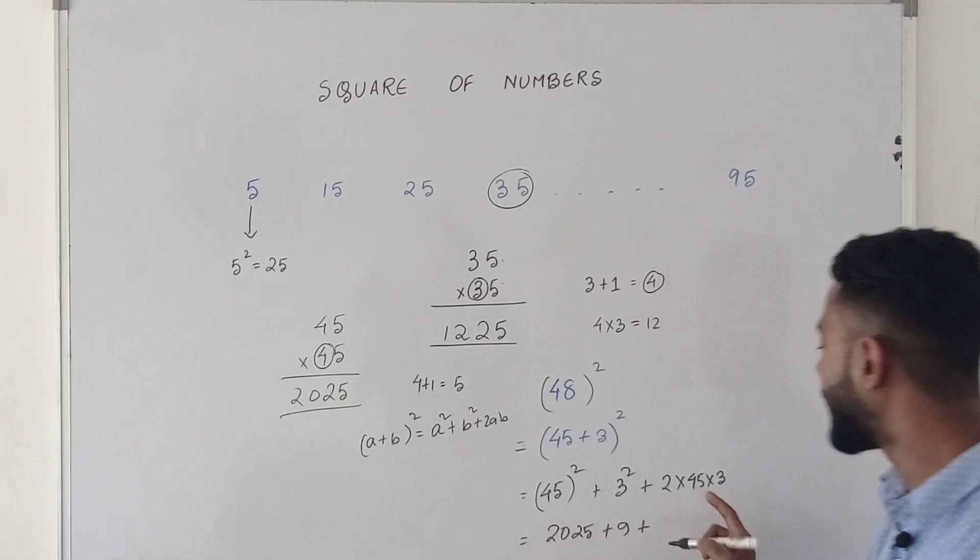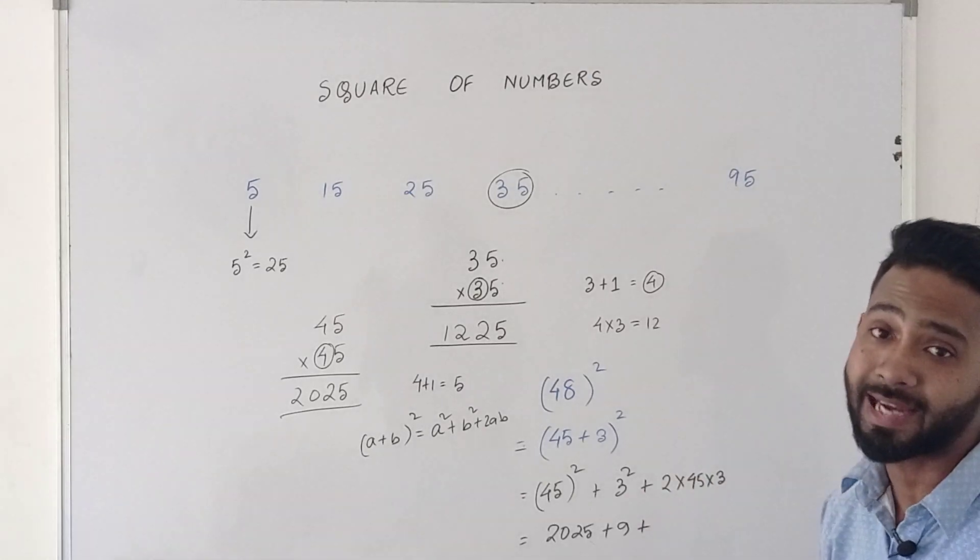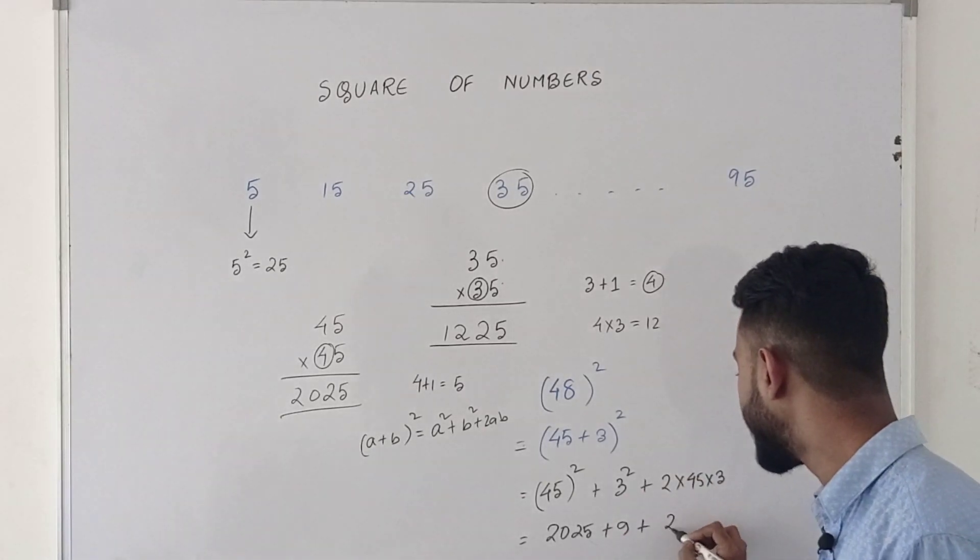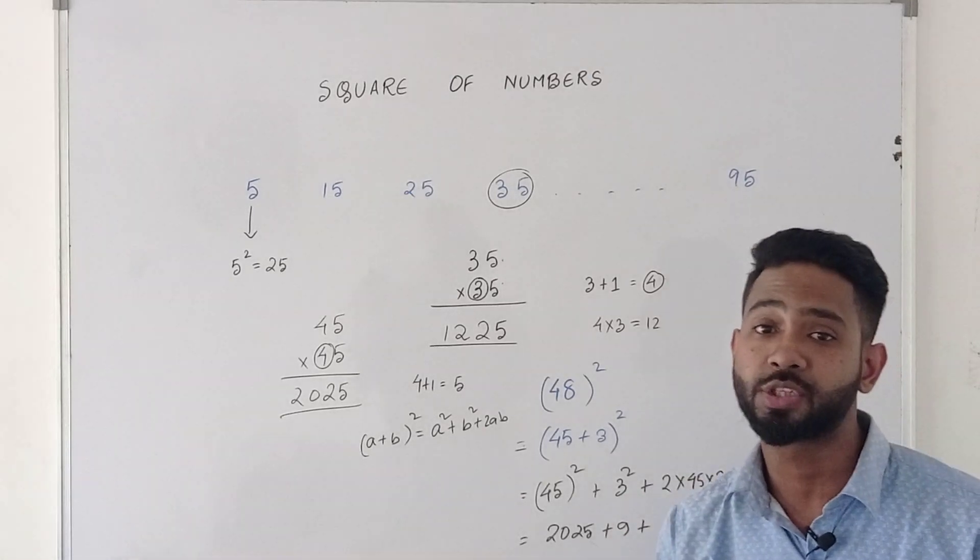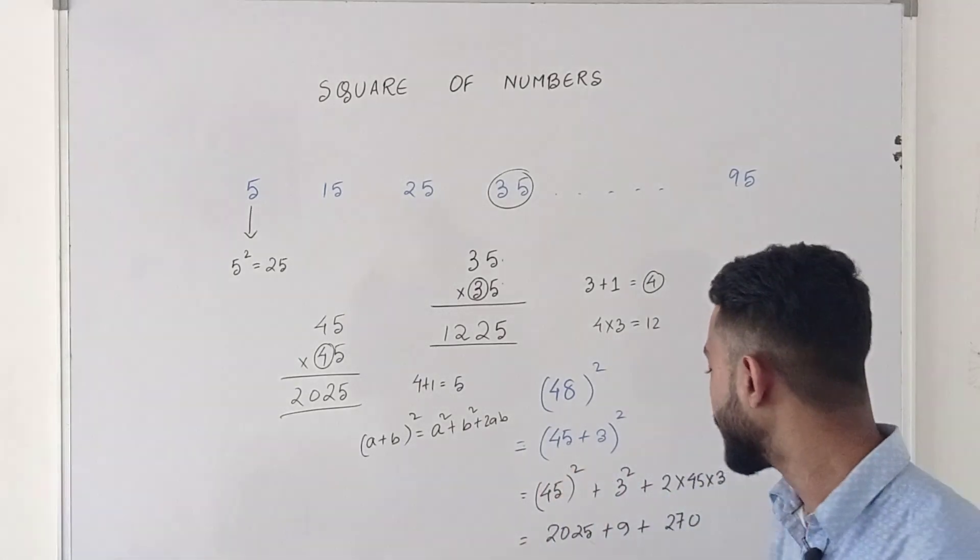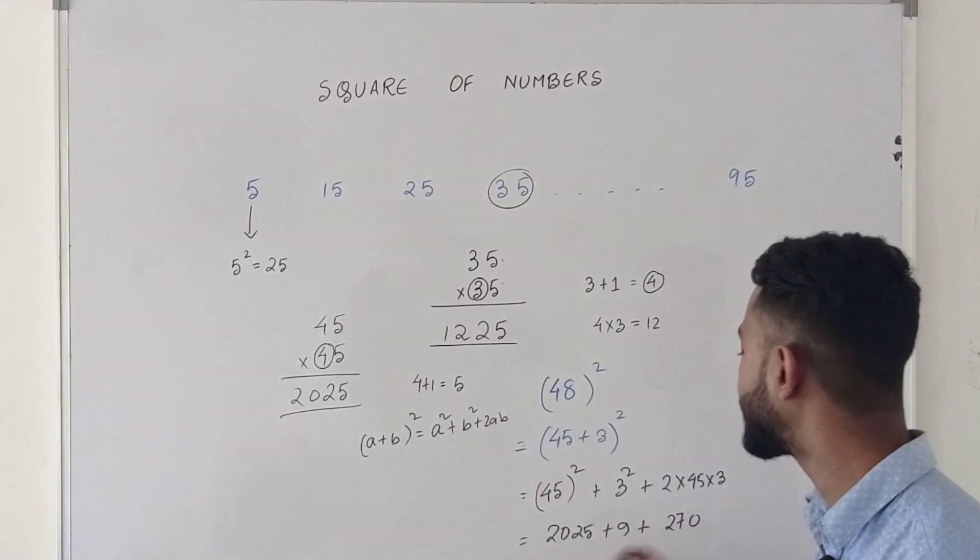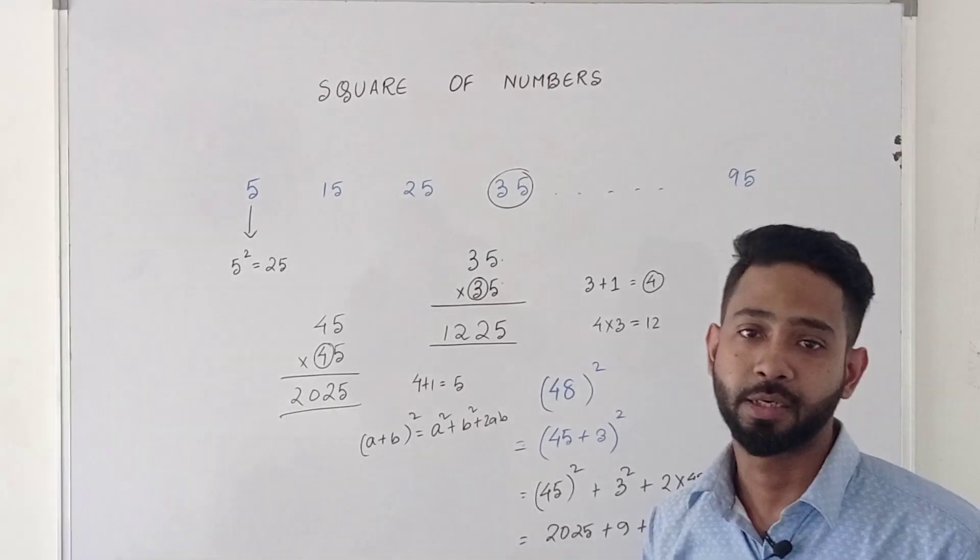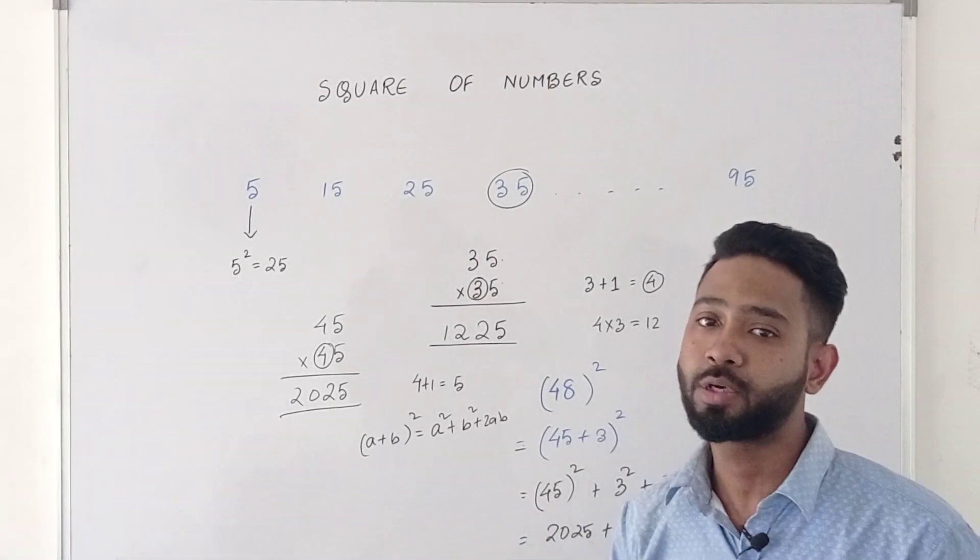2 into 45 is 90, 90 into 3 that is 270. Now it's very important. These calculations are useful. So we are going to get the final answer. So that is how we can apply this trick to get our answers quickly.